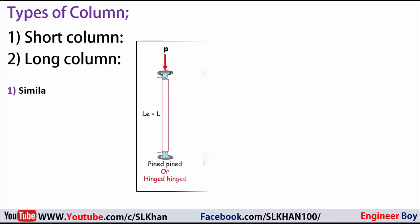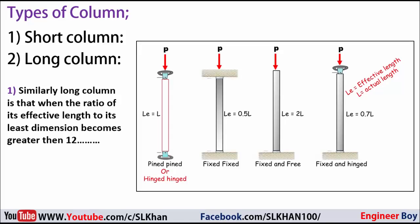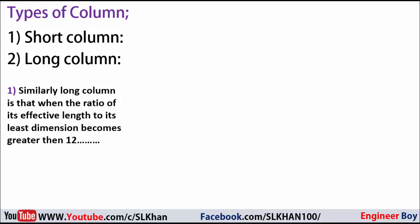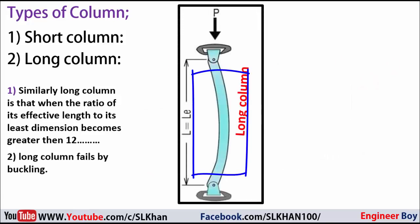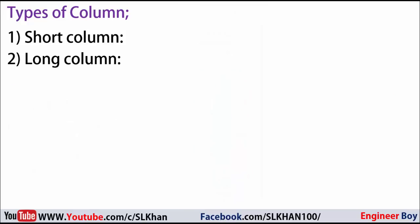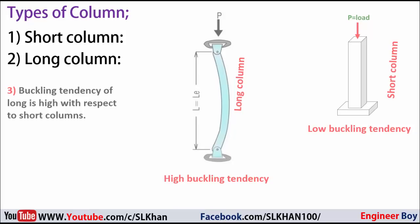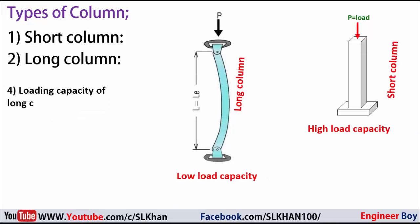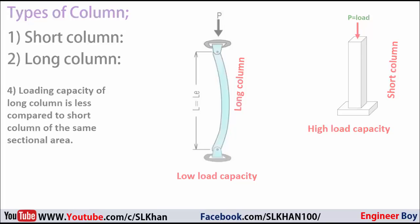Similarly, a long column is defined when the ratio of its effective length to its least dimension becomes greater than 12. Long columns fail by buckling, and there may not be crushing. The buckling tendency of a long column is higher compared to short columns. The load-carrying capacity of a long column is less compared to a short column of the same sectional area.